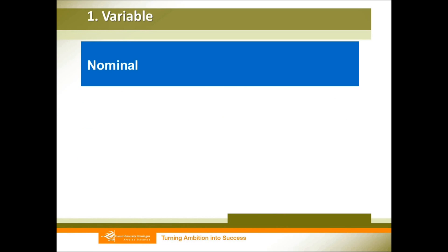Besides, we can also use four levels of measurement to measure our variables. The first is the nominal variable. Nominal variable means you only have categories, and none of these categories can be ranked. For example, gender — we cannot say females are better than males or males are better than females. They are just equal categories, so that is a nominal variable.